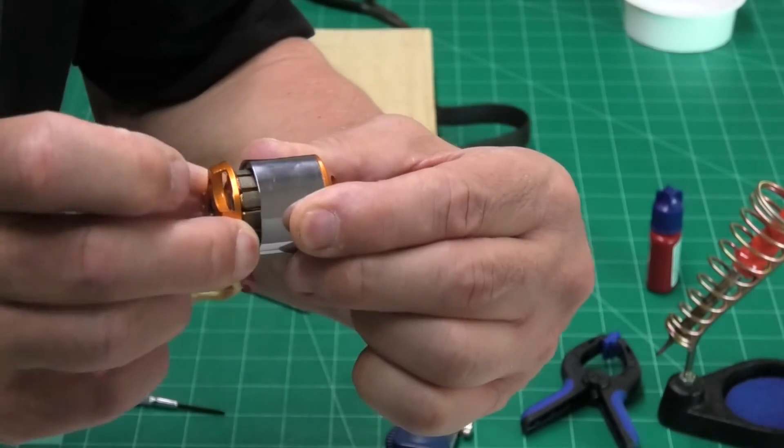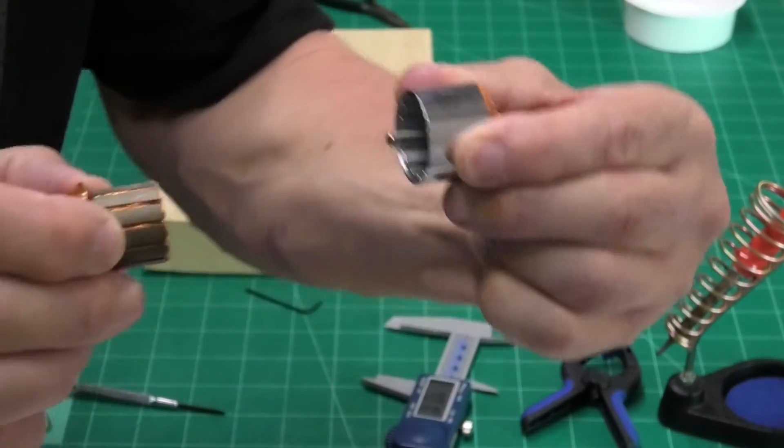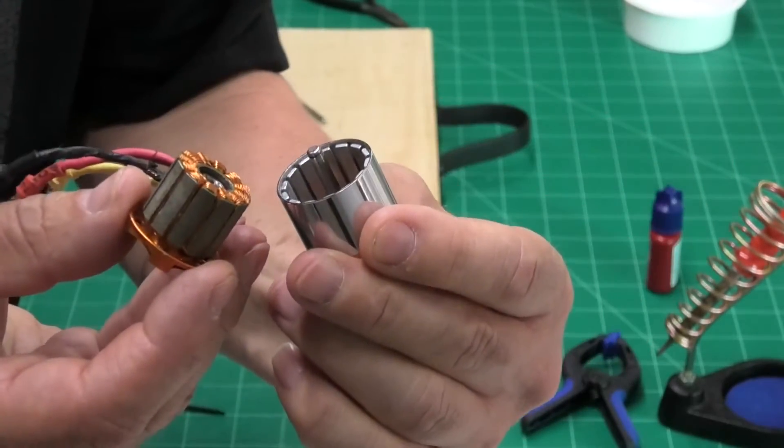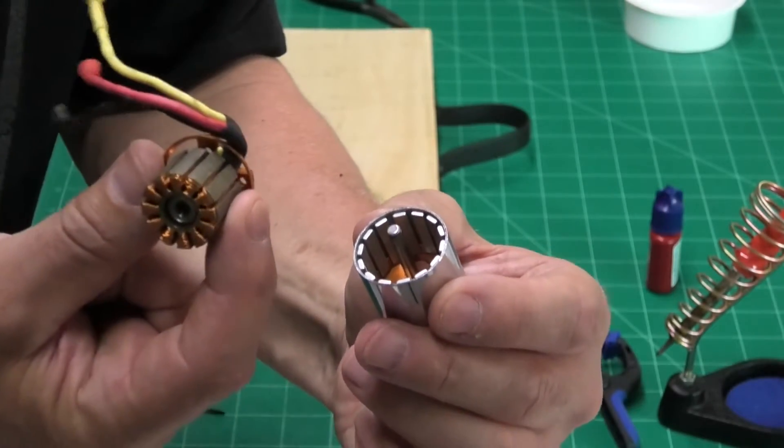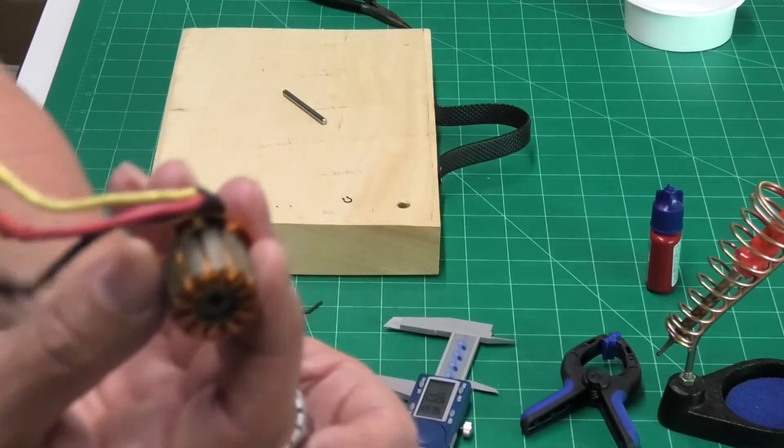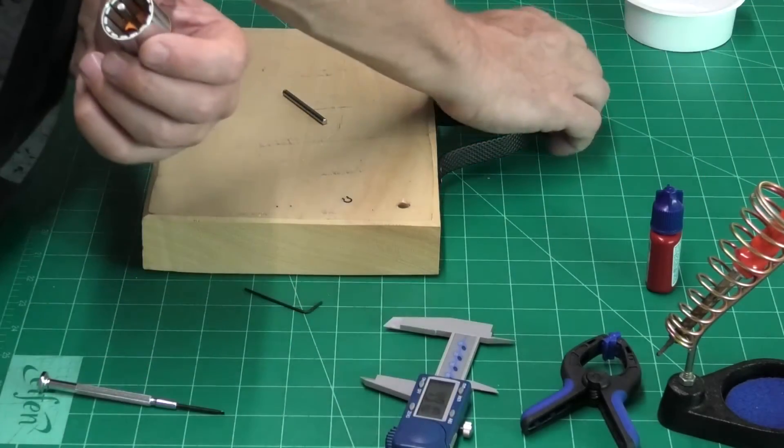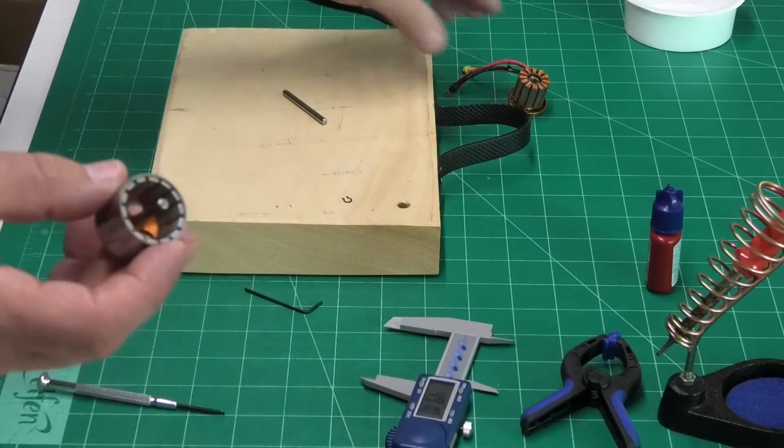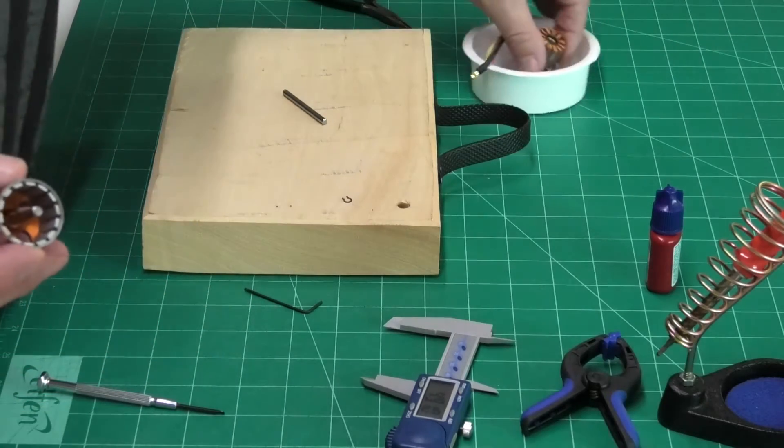Now, we've taken off the circlip on the back and the motor should just pull apart. A little bit of resistance there because of the magnets, but it just pulls out. Okay. So we can set this piece aside. This is fine. Don't need to do anything to that. Let's just put that in there with the circlip.